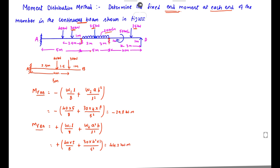Next, for member B-C: it has a 5-meter length with a UDL of 20 kN/m over the entire length and a point load of 25 kN located 2 meters from B and 3 meters from C.